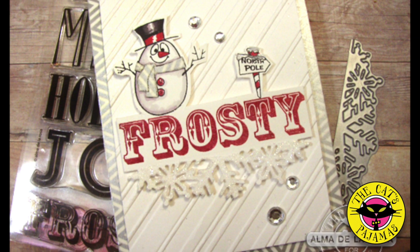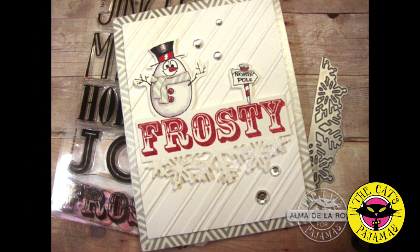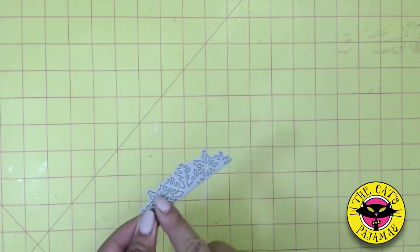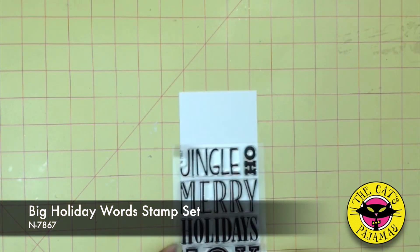Hey all, it's Alma with the Cat's Pajamas and today I'm going to show you how to create this cool frosty card. We'll be using the Snowflake Topper from our Holiday Topper Cut-Ups. It's the perfect width to use along with our big holiday word set.